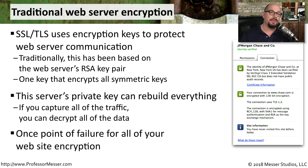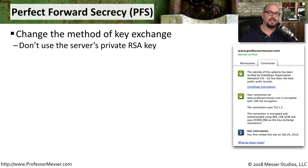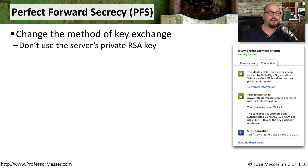Fortunately, there are things you can do to remove this particular point of failure while still maintaining the security of all your network traffic. One way to avoid this single point of failure is through the use of perfect forward secrecy, or PFS. This is a different way of exchanging keys — you're not using the server's private key; instead, you create keys on the fly.